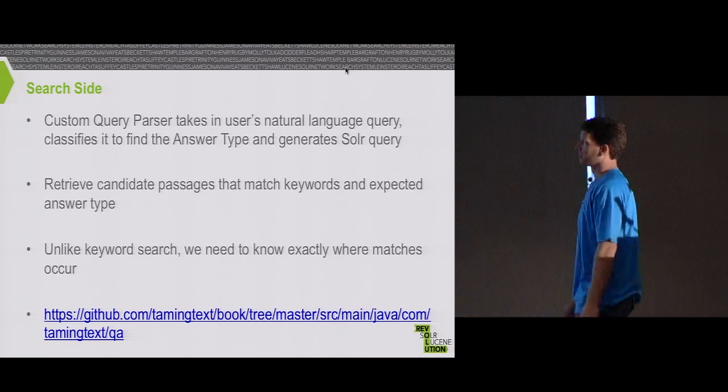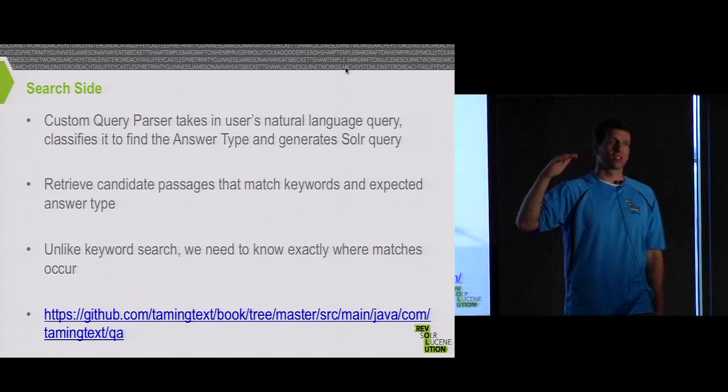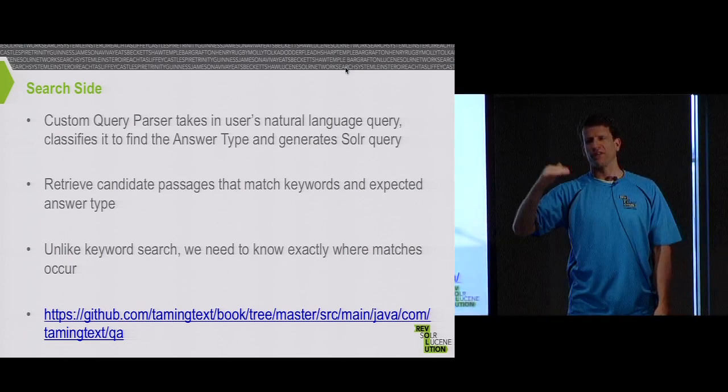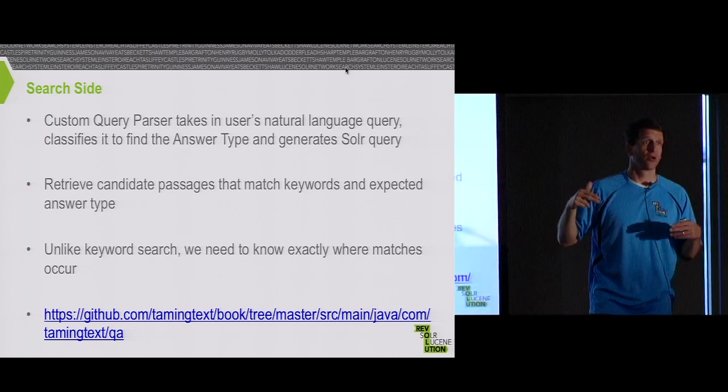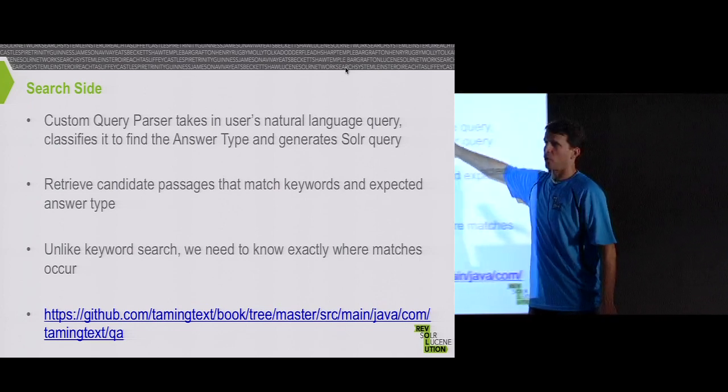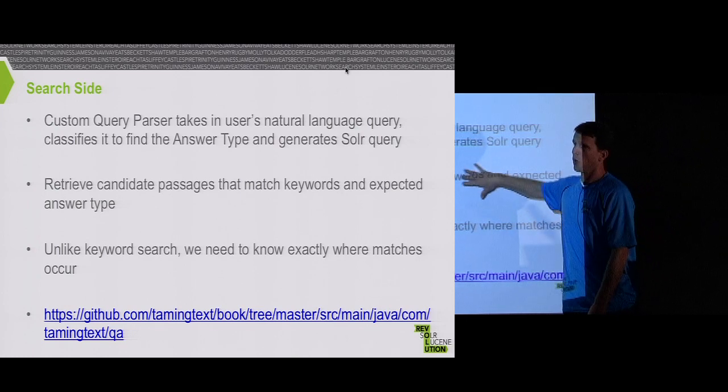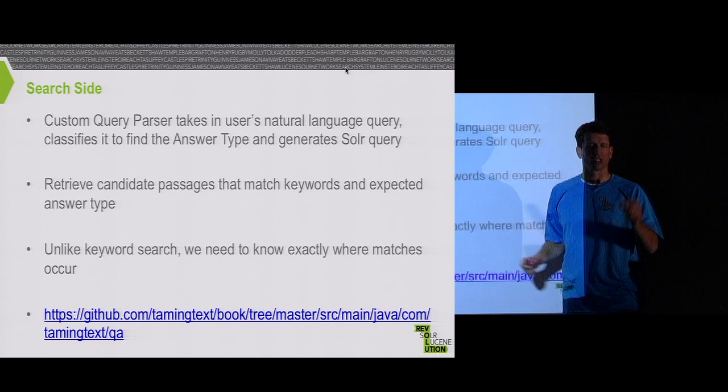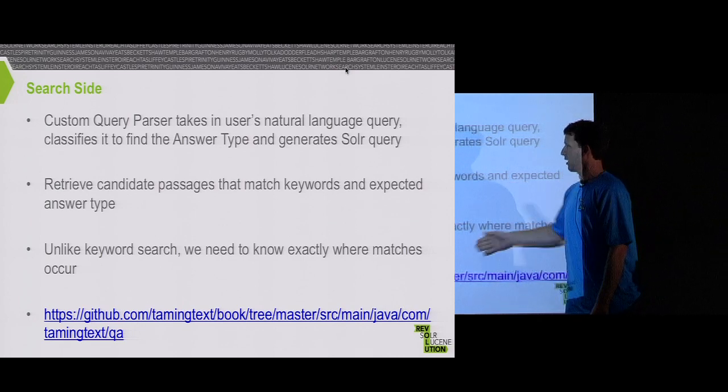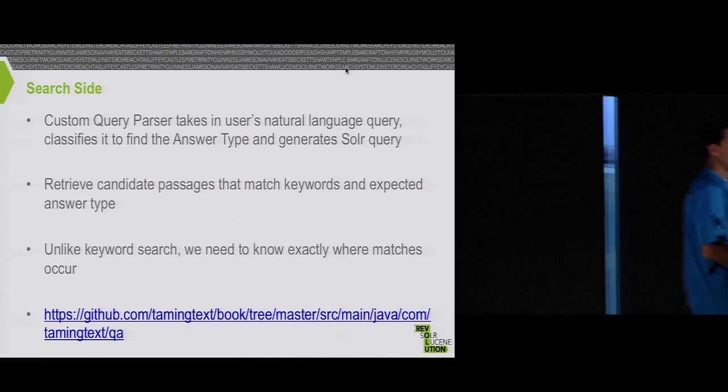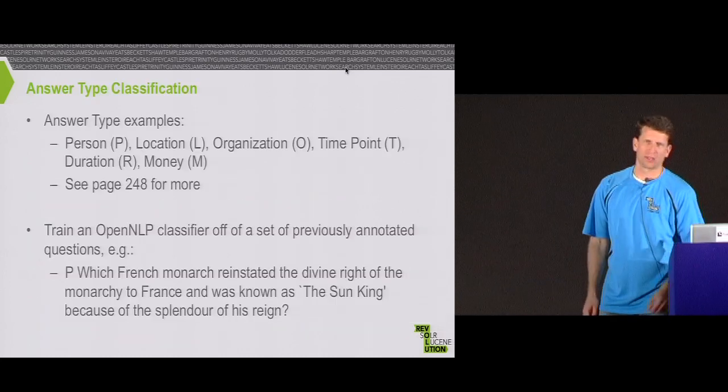On the search side, what we've built out is a custom query parser that essentially uses a classifier to say, what is this thing looking for? What kind of answer type is this? This is essentially in Solr parlance a Q parser, a Q parser plugin. That question comes in, we do a classification of it. We say this thing is looking for an organization. We then use span queries, which allow you to not only find which document matches but where in the document does it match, and then we return back those passages.